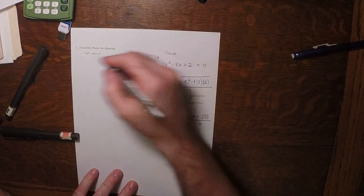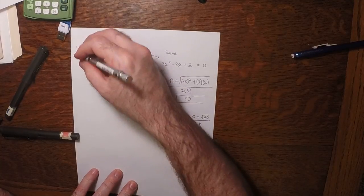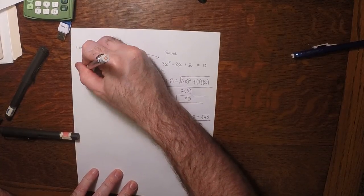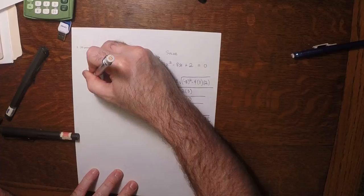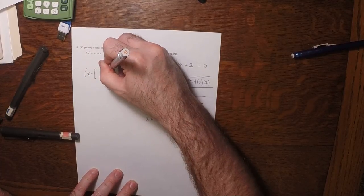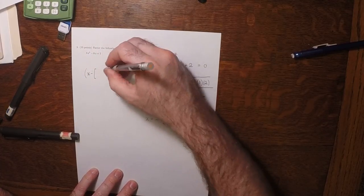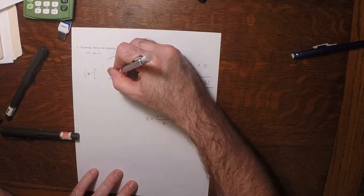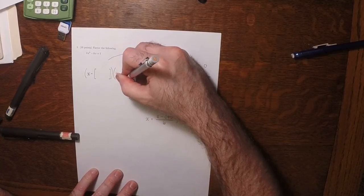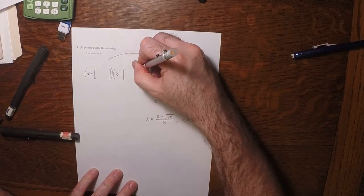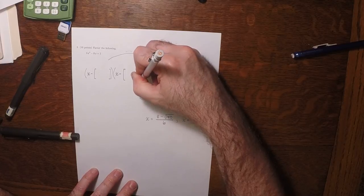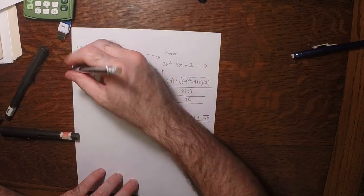Now the thing is, is that this must factor in the following way: it must factor as (x - something) multiplied by (x - another something).